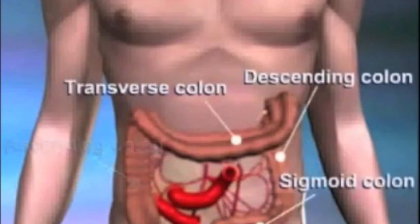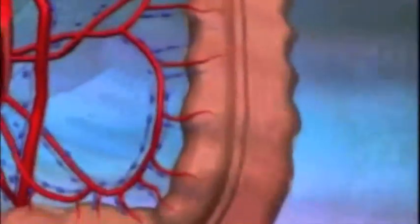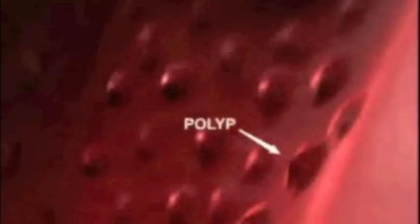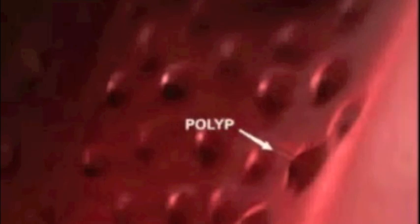The cause of cancer is an uncontrolled multiplication of cells lining the colon. Before a true cancer develops, it usually begins as a non-cancerous growth called a polyp. Certain people can have multiple polyps in their colon, which are inherited genetically.